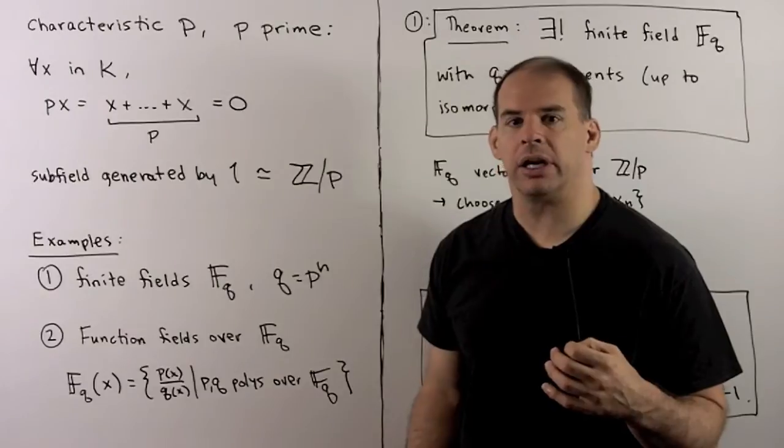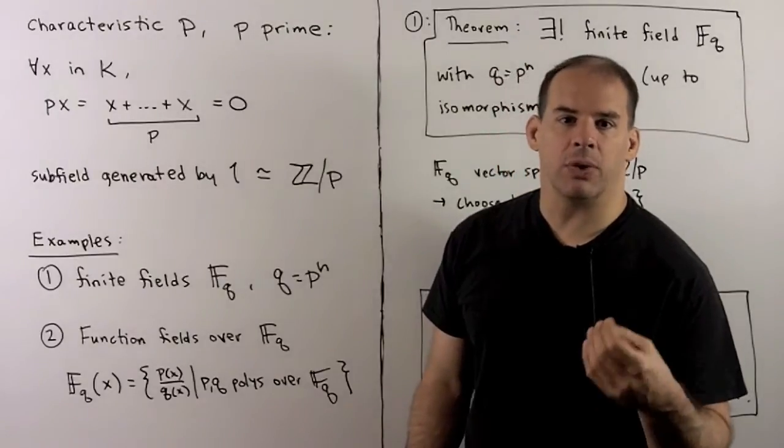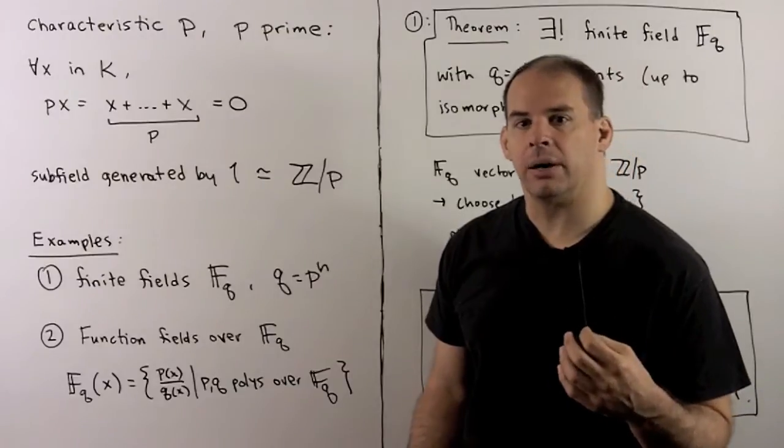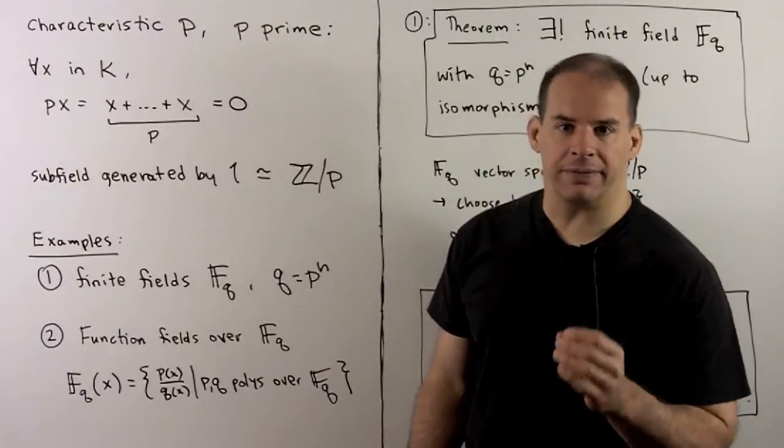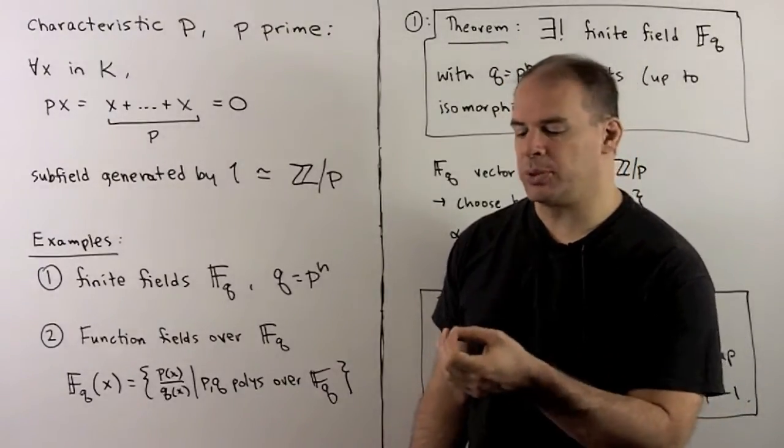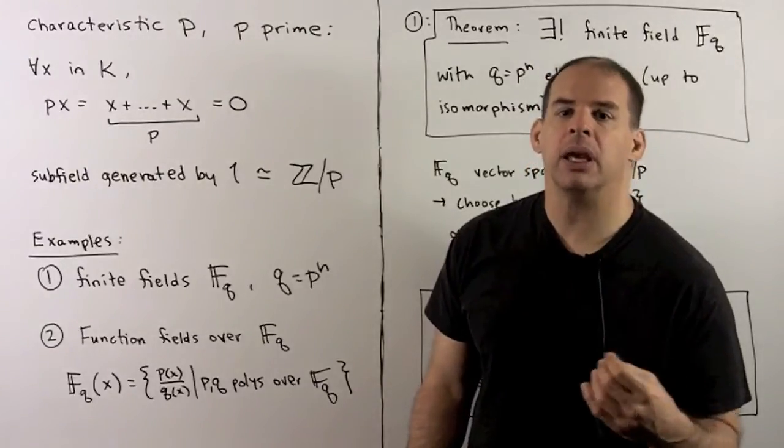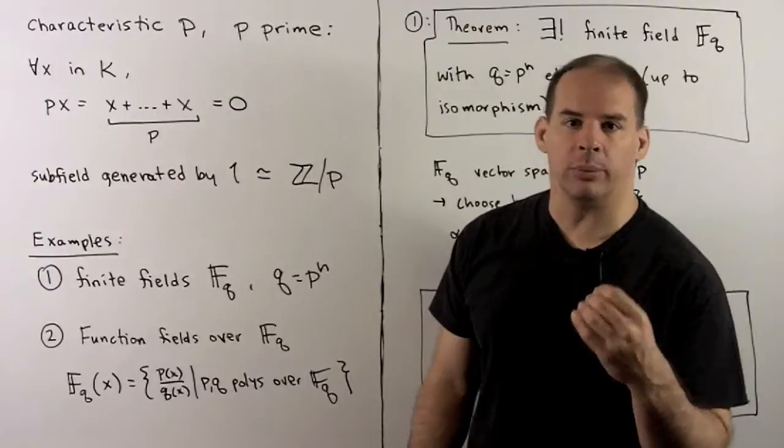For our first pass at Galois theory, a good idea is to focus on number fields to develop intuition. In here, we'll also consider finite fields. The differences between characteristic zero and characteristic p are very interesting, and it will require only a little bit more work.